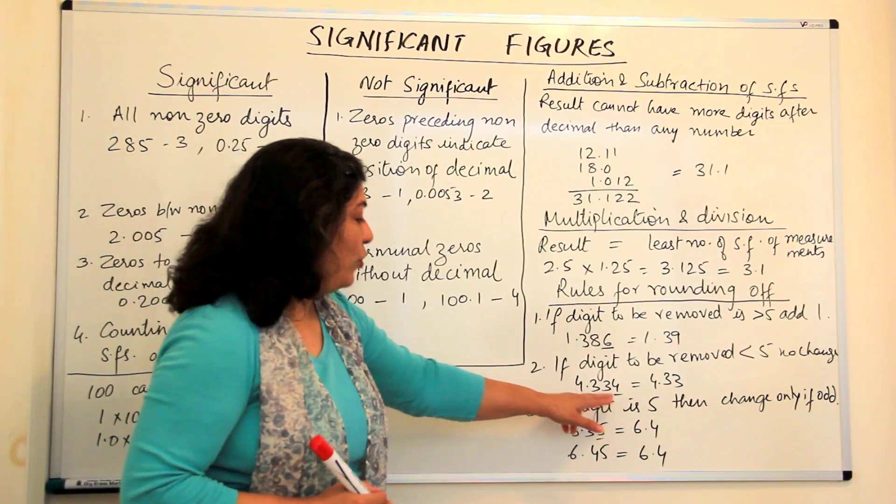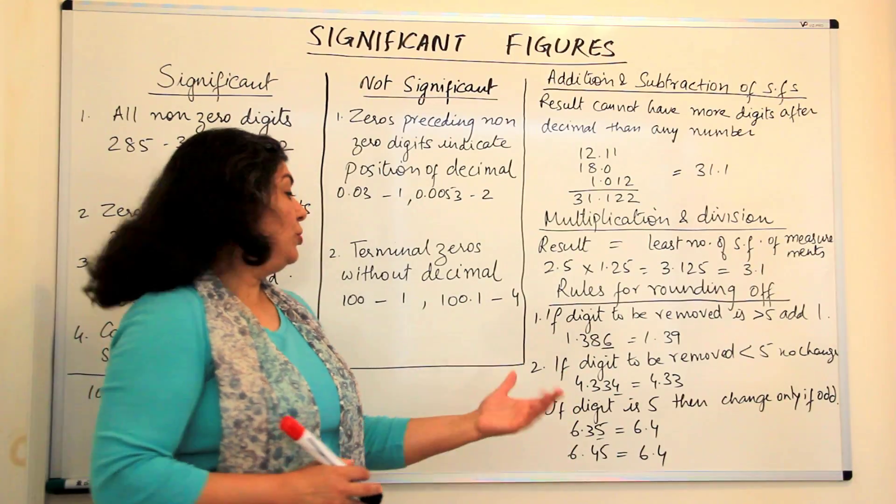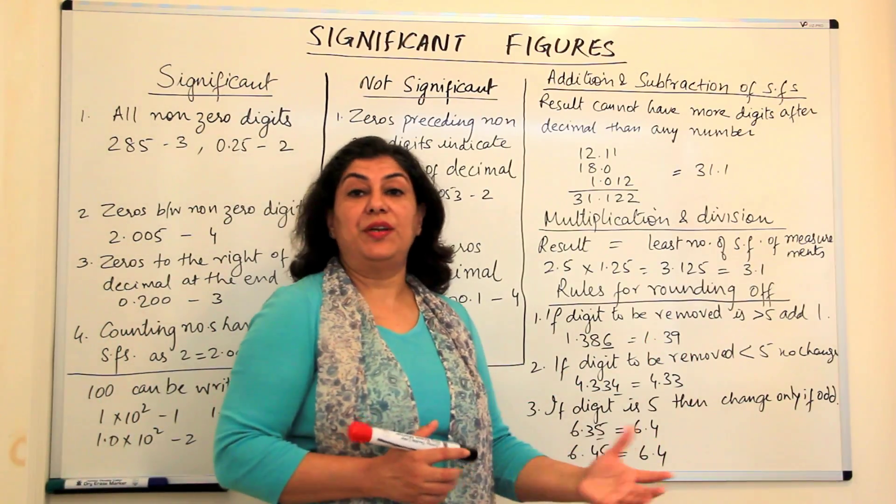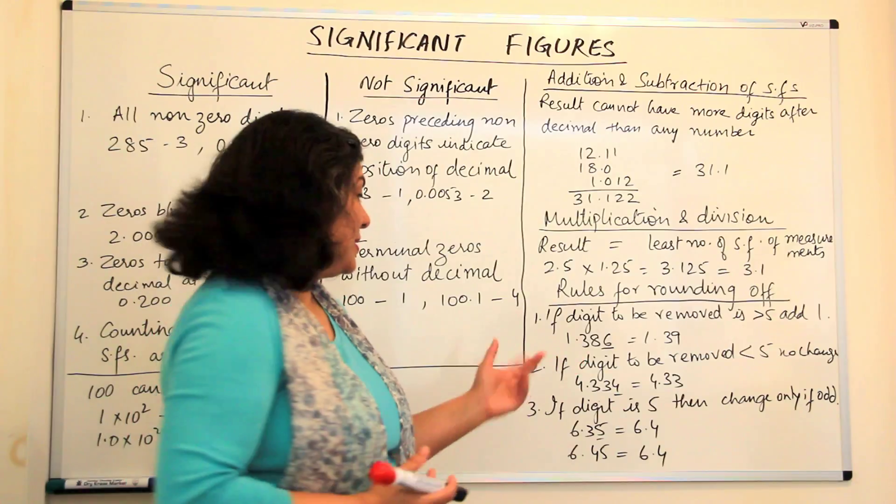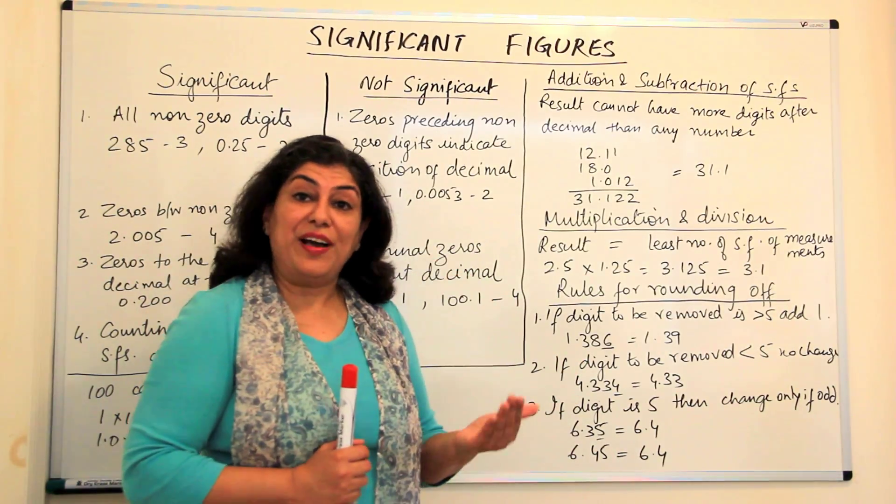For example, 4.334 would be reported and 4 has to be dropped. So the number will be 4.33. We do not increase or decrease the preceding number. But if the digit is 5,